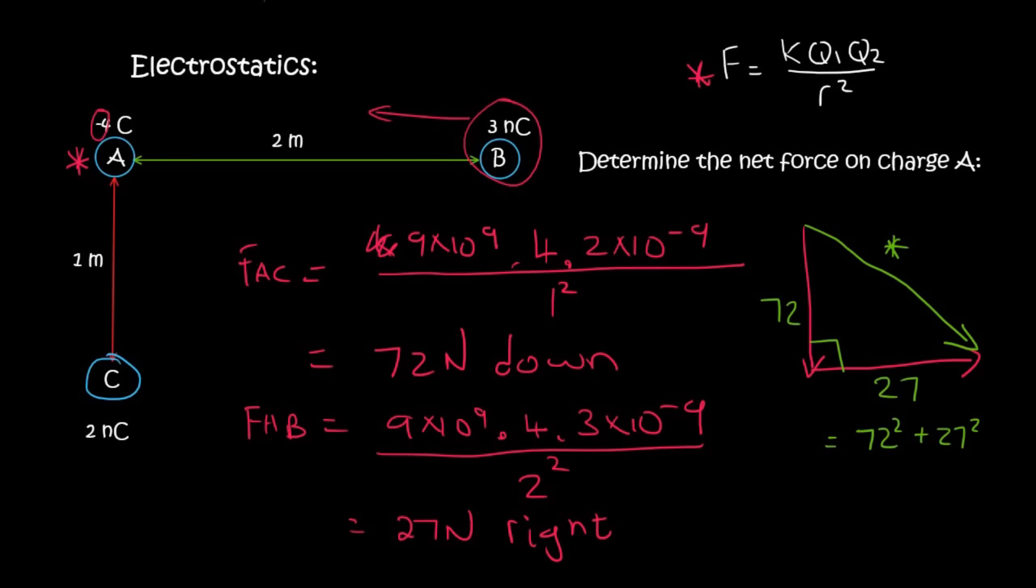So we can say 72 squared plus 27 squared. And that's going to be equal to the result. So I'm going to say R squared. And then R will just be the square root of 72 squared plus 27 squared. And then you type that all in the calculator. You never want to take the square root of those separately. It doesn't work.